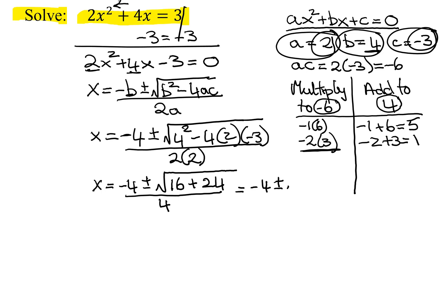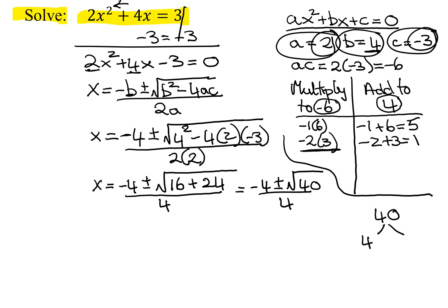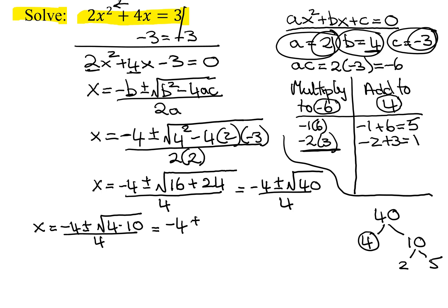So it's negative 4 plus or minus the square root of 16 plus 24, which is 40, all divided by 4. Now we have to simplify the square root of 40. Well, 40 is 4 times 10. 4 is a perfect square, and 10 is 2 times 5. So I'm going to write x equals negative 4 plus or minus the square root of 4 times the square root of 10, over 4.